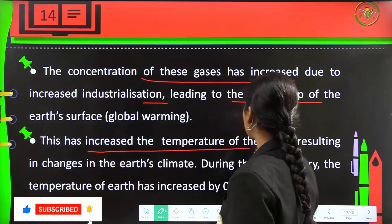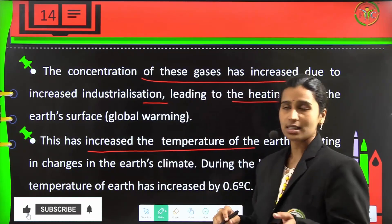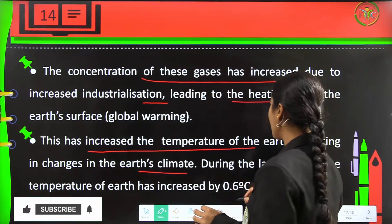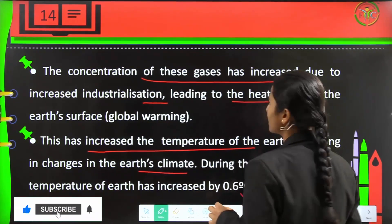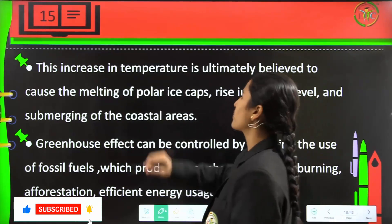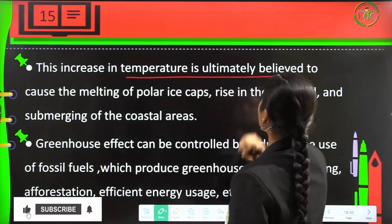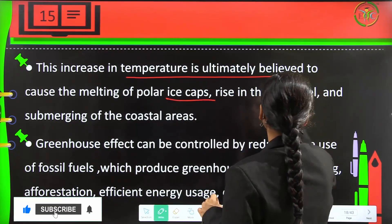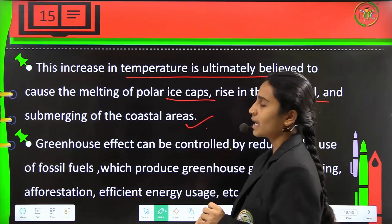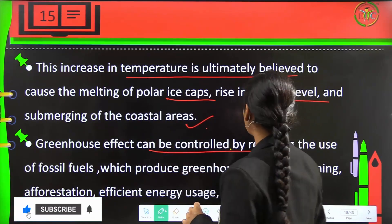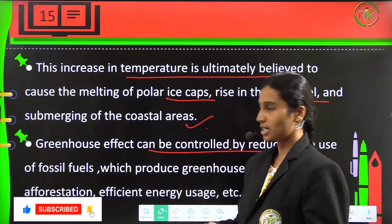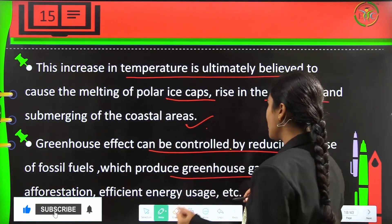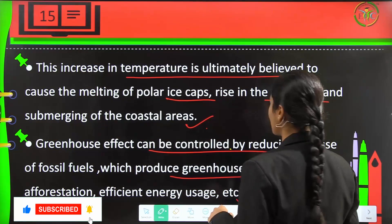This has increased the temperature of the earth, resulting in changes in earth's climate. During the last century, the temperature of earth has increased by 0.6 degrees centigrade because of pollution. This increase in temperature is believed to cause the melting of polar ice caps, a rise in sea level, and the submerging of coastal areas. The greenhouse effect can be controlled by reducing the use of fossil fuels, afforestation, and efficient energy usage.